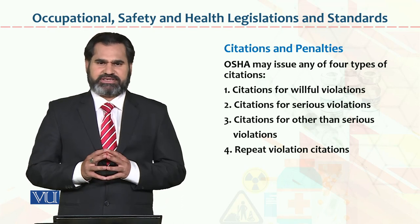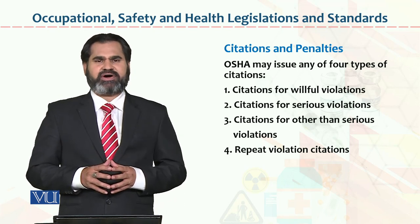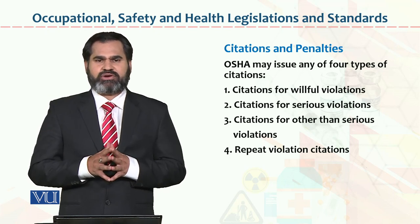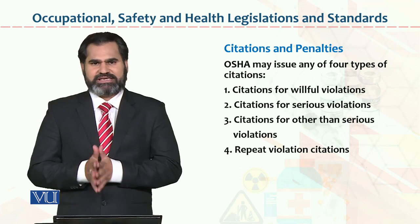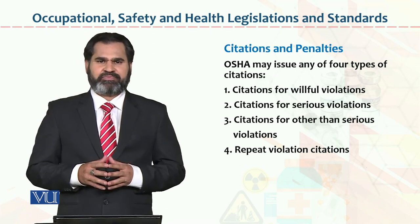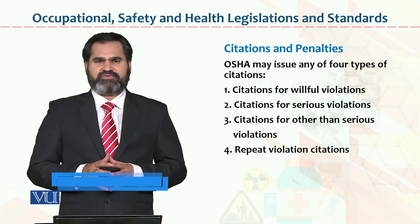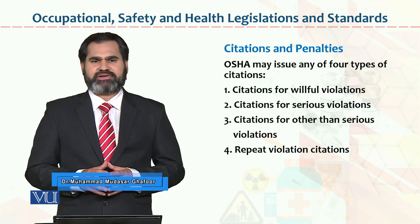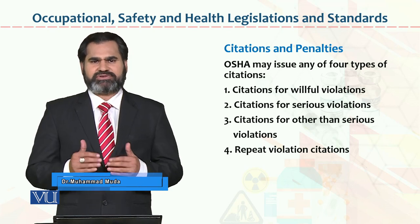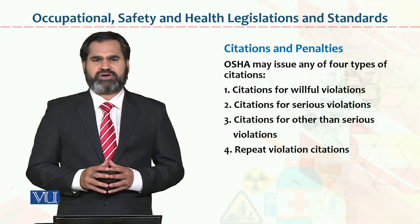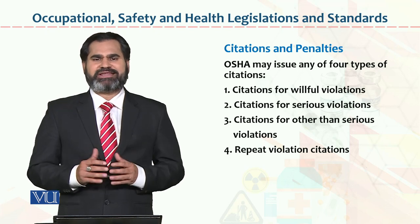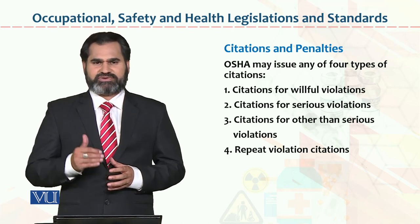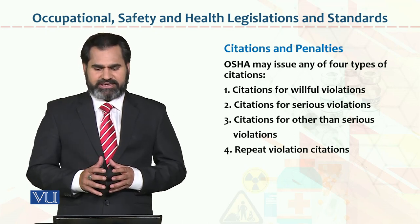Dear students, these four types can be: Number one, citation for willful violation. This means the employee knowingly committed the violation that they should not have done. For example, consider traffic signals — green means go, yellow means get ready, and red means stop. If there is a red signal and you willfully violate it and try to pass or do pass, that is called a willful violation.